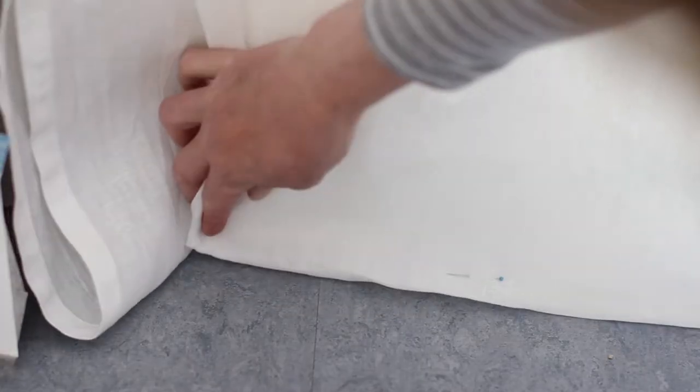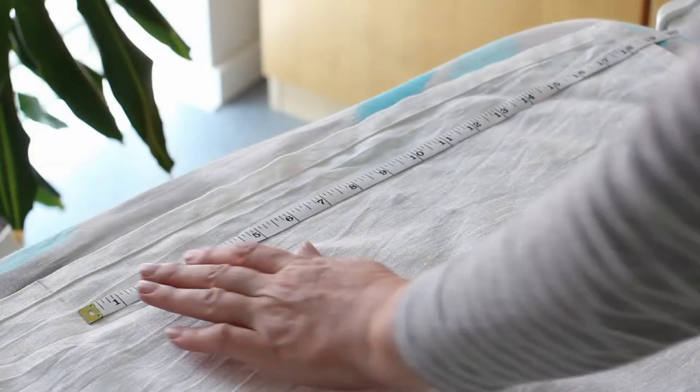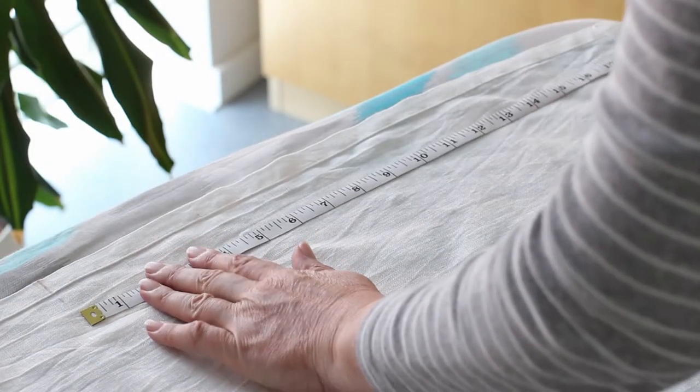The first thing you need to do is to hang your curtains up on the curtain pole and then turn them under at the bottom and pin them exactly where you'd like them to fall to on the floor.